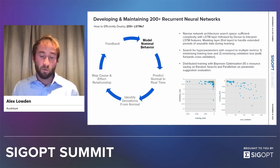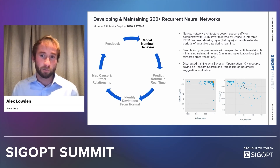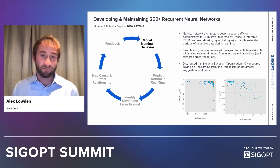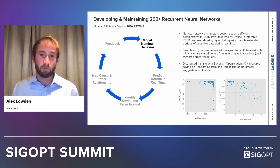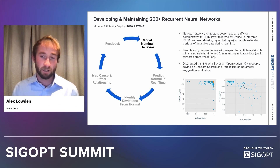On top of this, performing distributed training with Bayesian optimization and parallelization on parameter search evaluation also significantly helps reduce the requirement on resources. Each time you're evaluating a set of hyperparameters, you can be in parallel evaluating multiple suggestions simultaneously. We found about a 10x resource saving compared to random search.